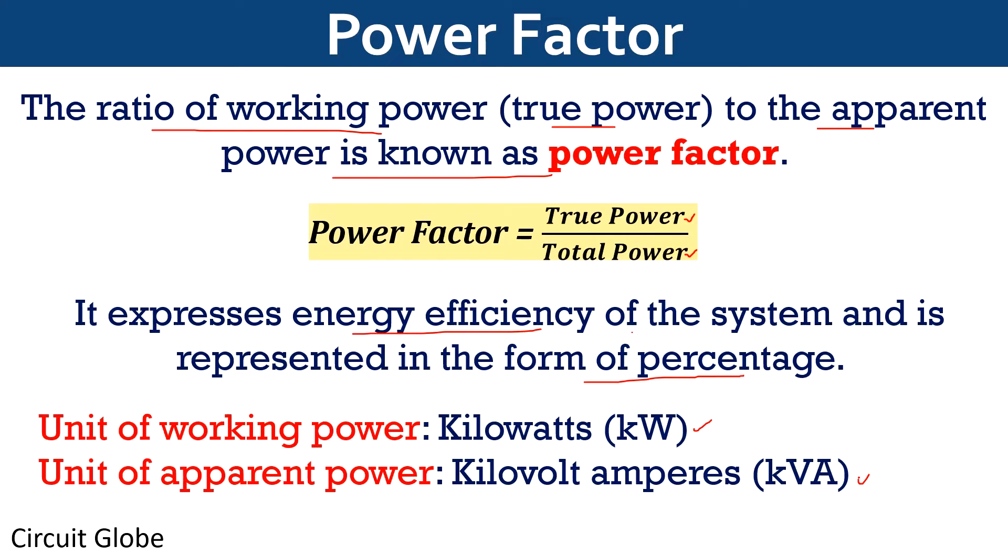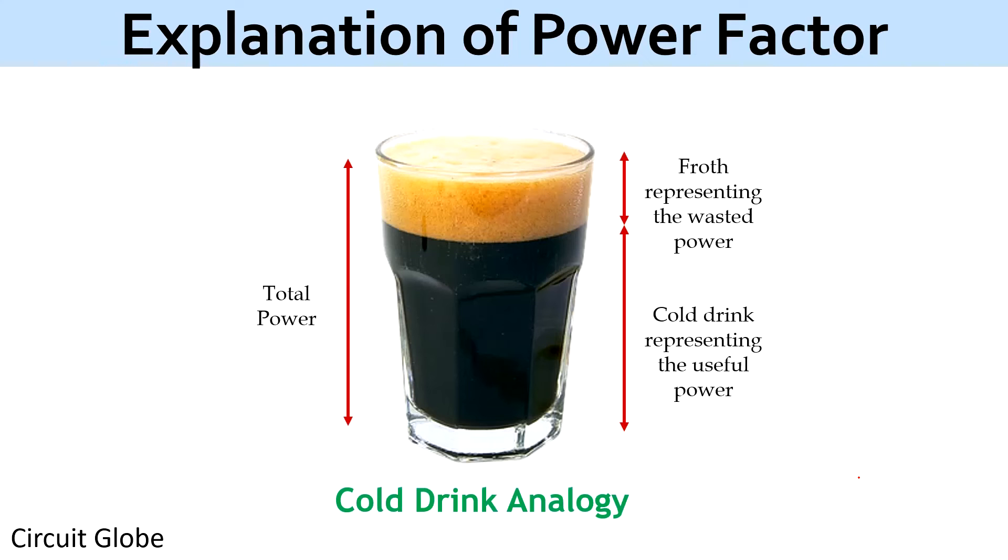The apparent power corresponds to the power demanded by the system to perform the operation, while true power corresponds to the power which is actually utilized by the system to generate the required output. Consider the example shown here. Here we are having a glass filled with cold drink. The quantity of this whole glass represents the overall power or total power demanded by the system. We can clearly see that some part of the glass is filled with cold drink, while some part is filled with froth. This cold drink part of the glass represents the useful power, that is the energy that is doing work. This is called the active power of the system.